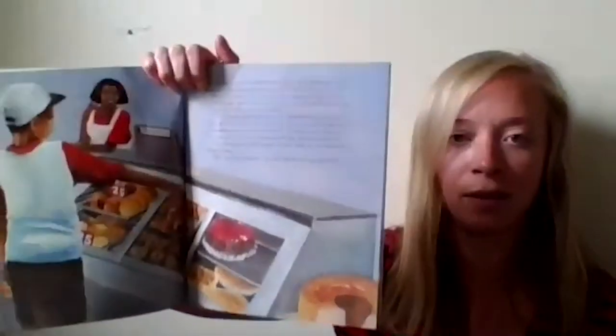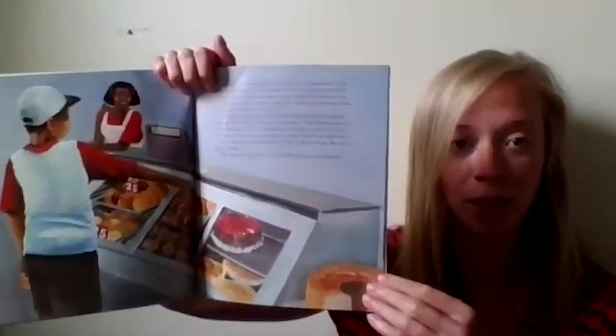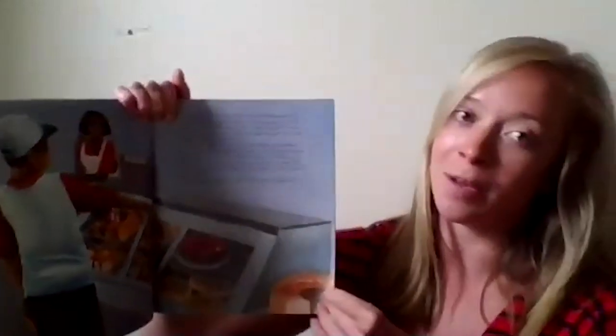And the first place that he goes is to Mrs. Montgomery's bakery, and he is interested in getting the strawberry shortcake for his grandmother because he knows that she absolutely loves them.